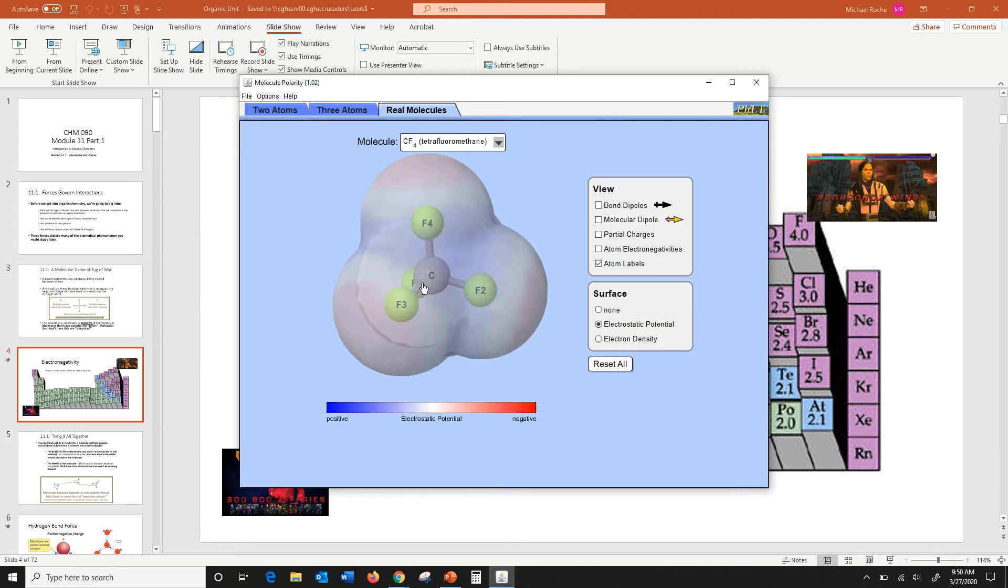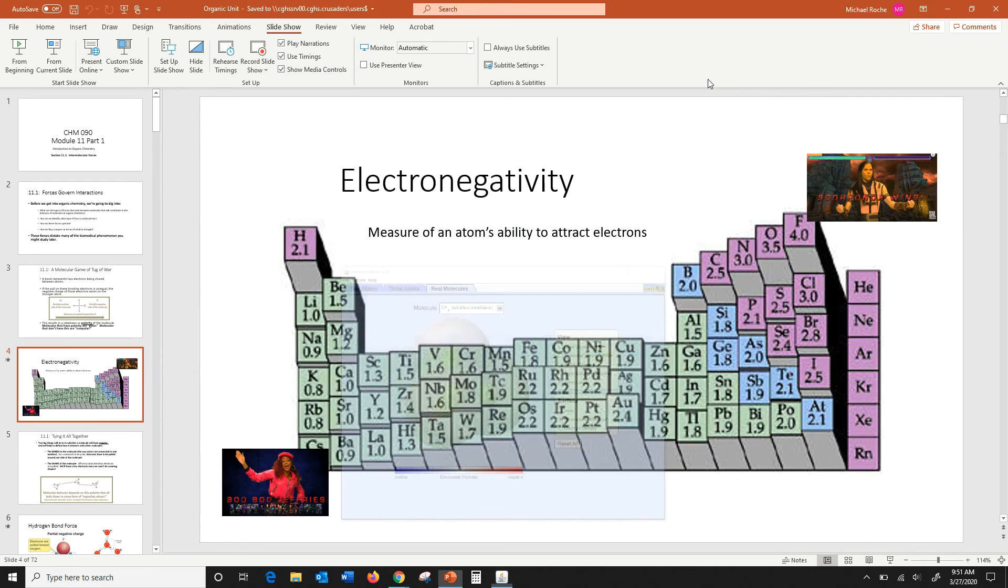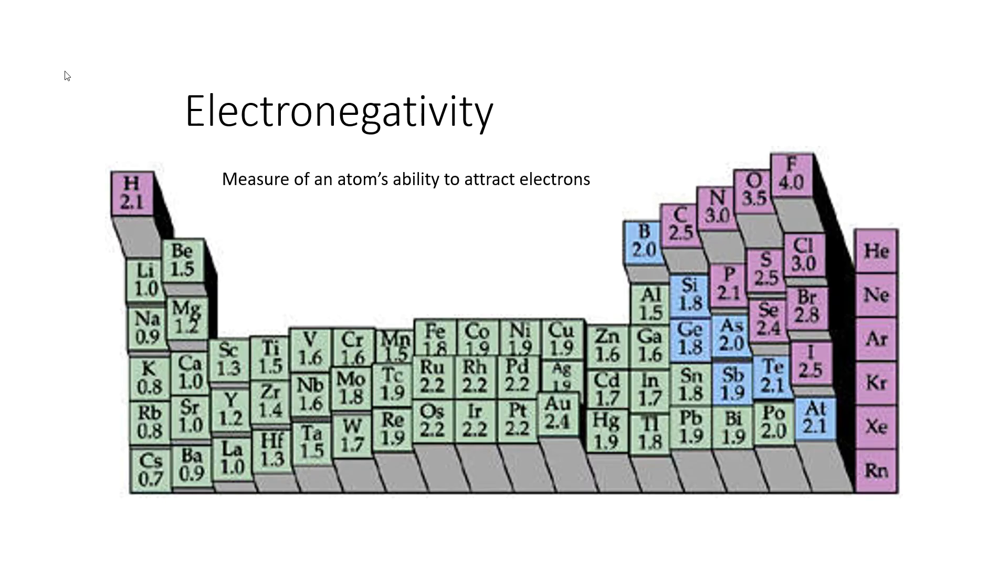Because all that negative is sort of making a coating for that positive center. And you can't really line that up in an electric field. It's just, it looks like basically a negative ball. You can't really get to that center. So the point of all this is that shape does affect polarity. And that's the takeaway from it.